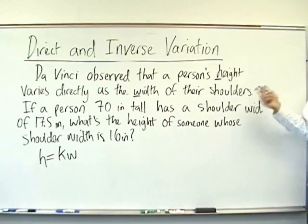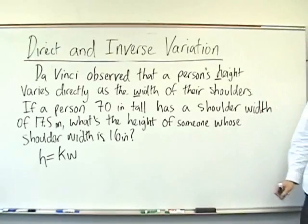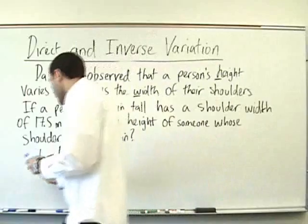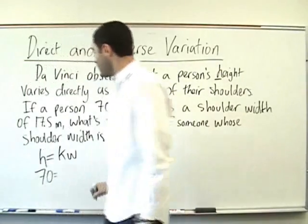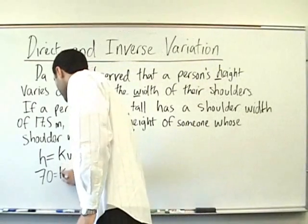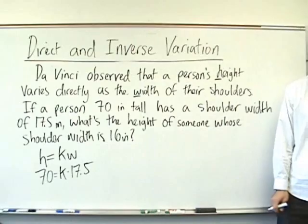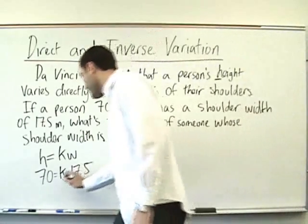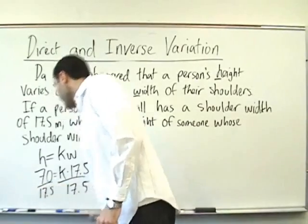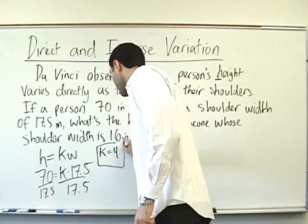All right. So, next sentence. If a person is 70 inches tall, so that's their height, has a shoulder width of 17.5 inches. Stop there. So, 70 inches tall, where does that go? H. Good. 70 equals what? K times 17.5. So, what do we do to both sides? Divide by 17.5. Can you tell us what that is, please? Four. K equals four. How about that?